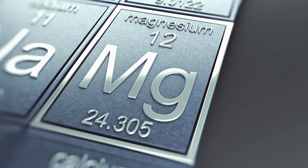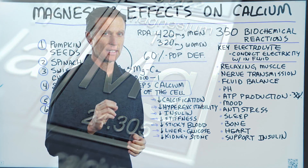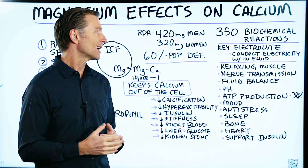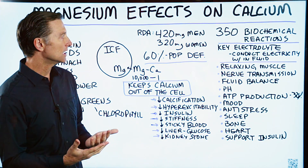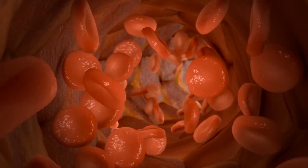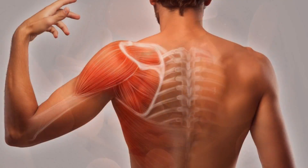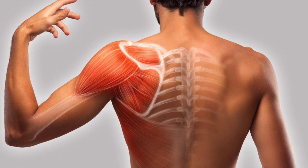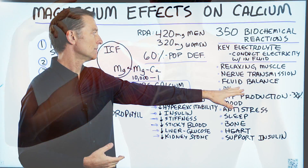Magnesium is also a key electrolyte, and electrolytes conduct electricity within the fluid of your body. Magnesium affects the relaxation of muscle and nerve transmission.